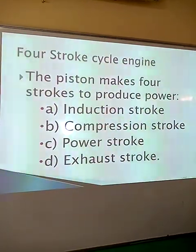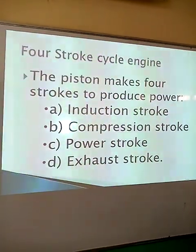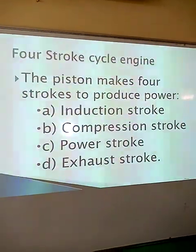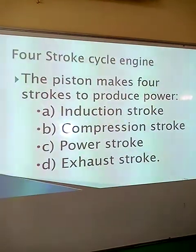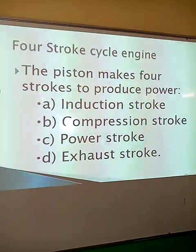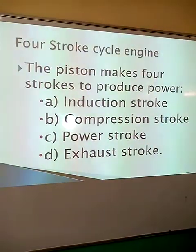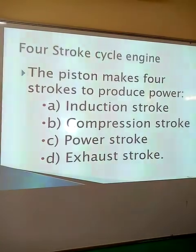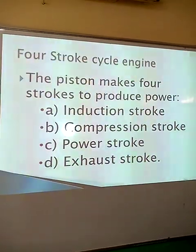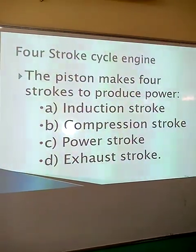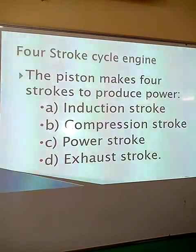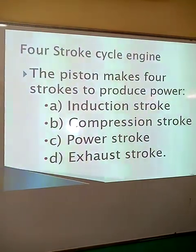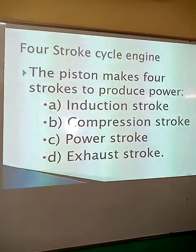One power cycle consists of four strokes, and the four strokes that make up one cycle to produce power are named as follows: we have the induction stroke, the compression stroke, the power stroke, and the exhaust stroke. This naming is basically a description of what happens in each stage, and these strokes happen very many times within a second so that power is produced within the engine.